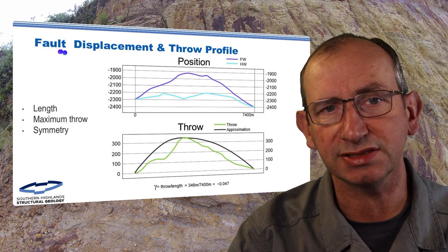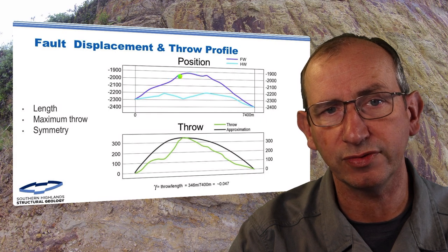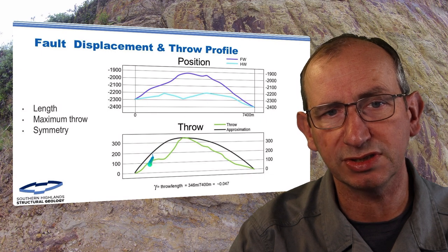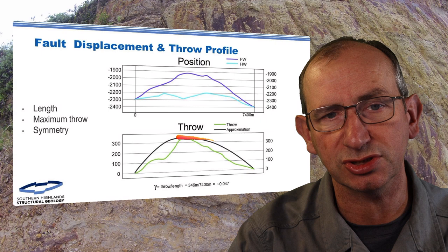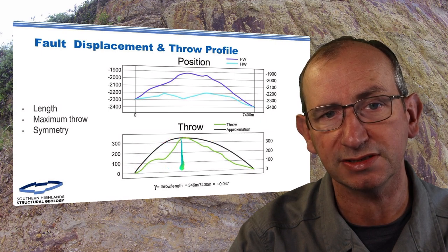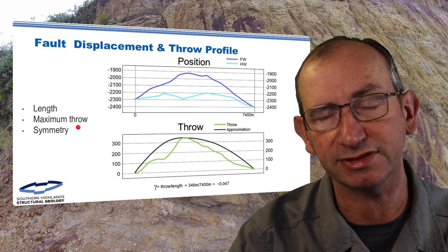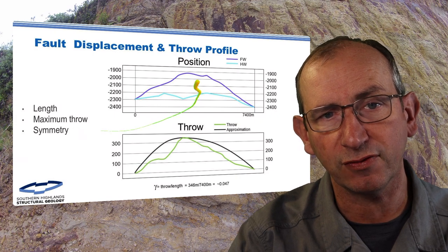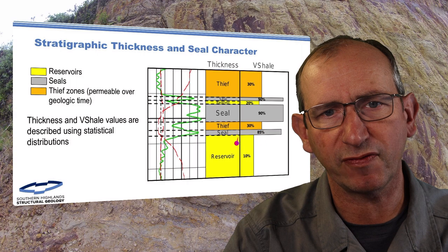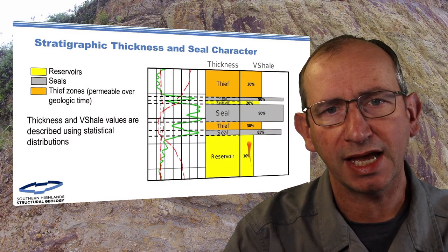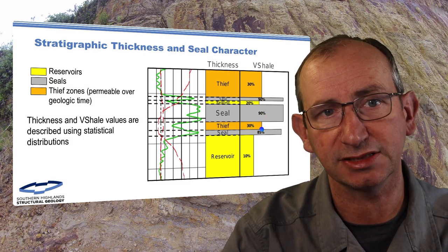The idea of stochastic fault analysis is that we drive it with a displacement profile from a key reference horizon. We take the up-thrown side of the footwall and the down-thrown side of the hangwall of a normal fault, looking at the separation to get our displacement profile. A theoretical displacement profile — a second order polynomial — basically drives this. The parameters are the length, maximum throw, and symmetry of the system, giving us a way to do a Monte Carlo simulation of the displacement field. We deal with stratigraphy by dividing up into reservoir and seal pairs, defining those as a set of thicknesses and V-shale for the SGR calculation, with potential thief zones to separate our seals.